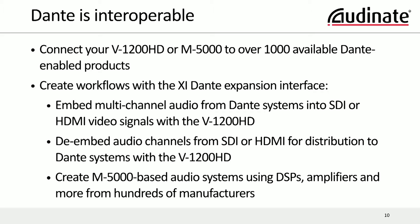With over 1,000 products on the market using Dante, the Dante XI card allows you to connect a V1200HD or M5000 to any number of these products — that's a guarantee. This allows you to create really innovative workflows. You can embed multi-channel audio from a Dante system into SDI or HDMI signals using the V1200, and you can de-embed audio from SDI or HDMI and send it over to any Dante system for recording or distribution. With the M5000, you can integrate with DSPs, amplifiers, powered speakers, microphones — all the products out there in the Dante universe.